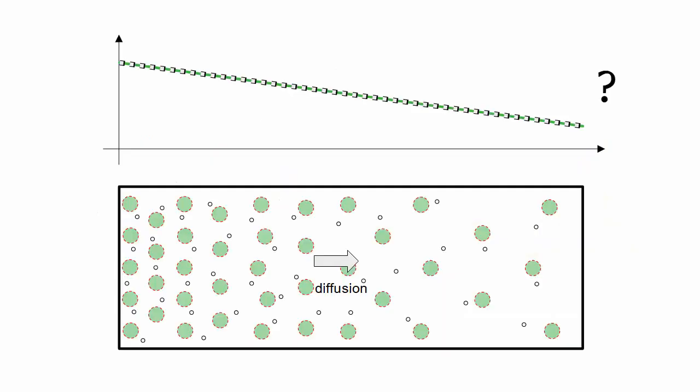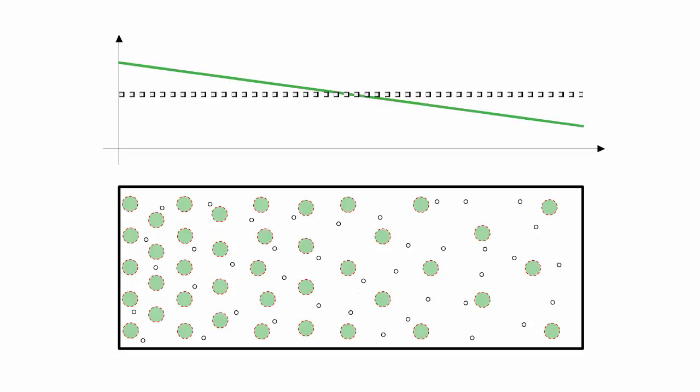After diffusion runs its course, you might expect the holes to settle into a flat, even distribution. But this is also not a stable state.